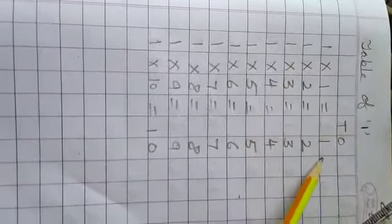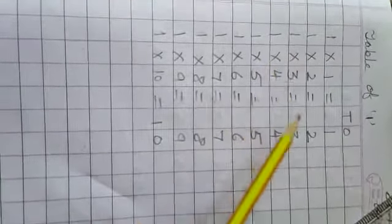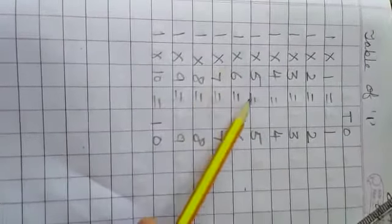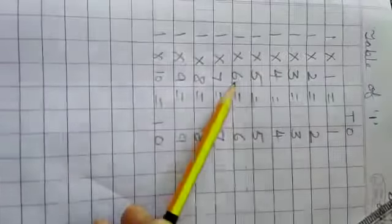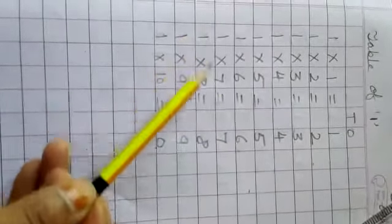Right? Repeat again. One ones are one. One twos are two. One threes are three. One fives are five. One sixes are six. One sevens are seven. One eights are eight. One nines are nine.